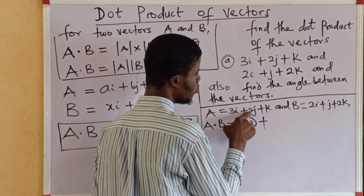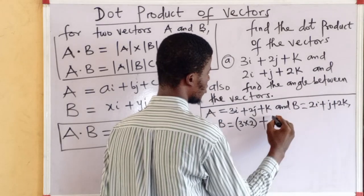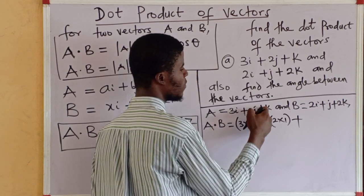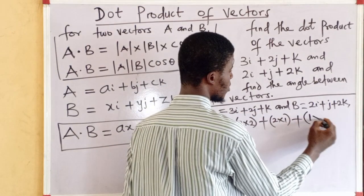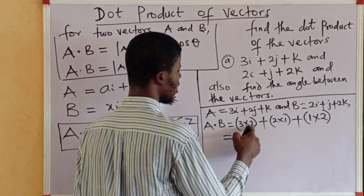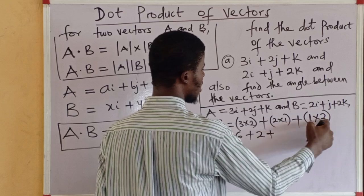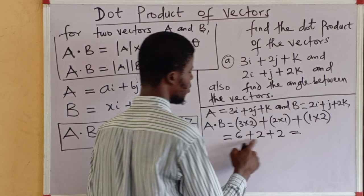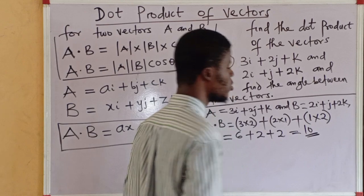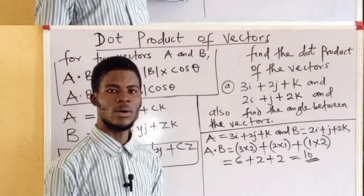Vector b is 2i plus j plus 2k. The dot product a dot b is 3 times 2, plus 2 times 1, plus 1 times 2. That gives us 6 plus 2 plus 2, which equals 10. So 10 is the dot product — or scalar product — of these two vectors.